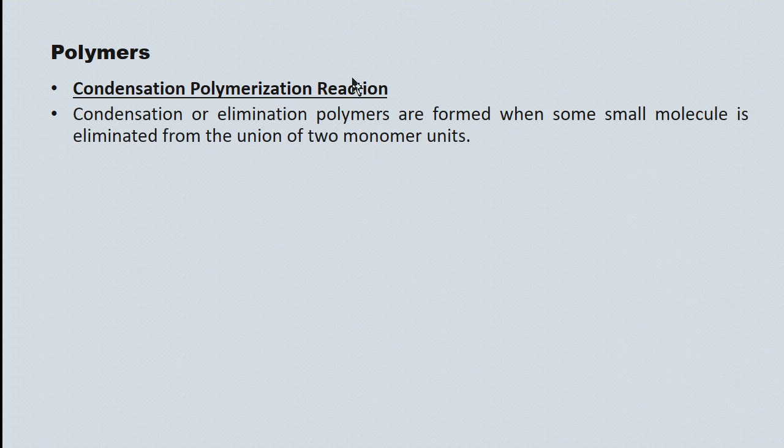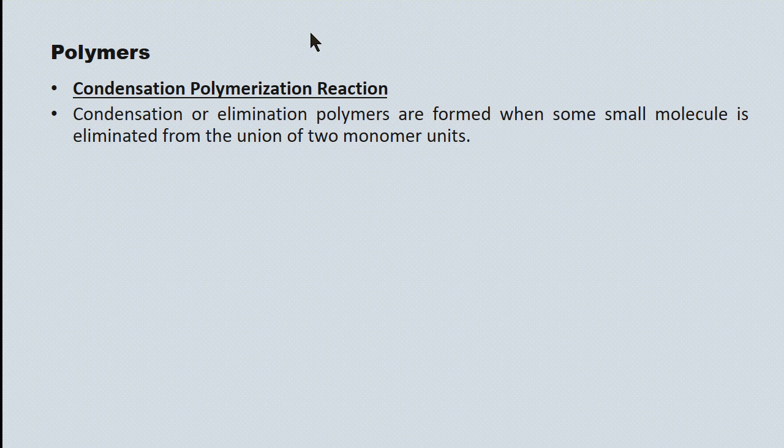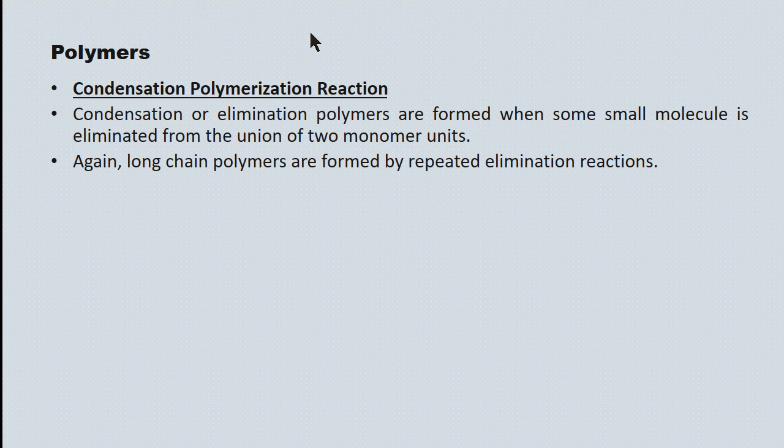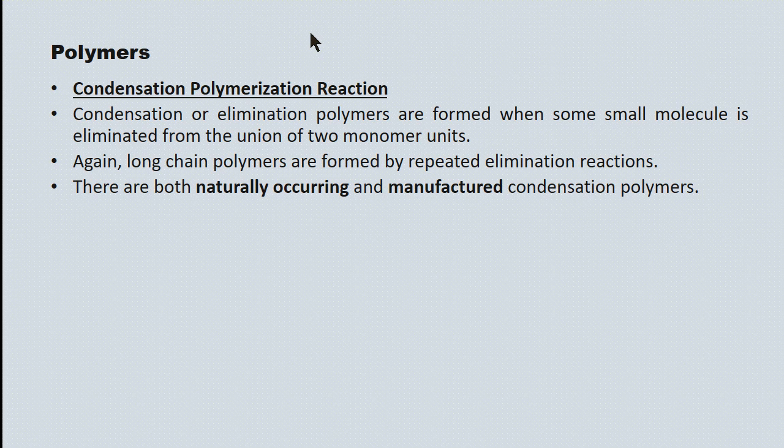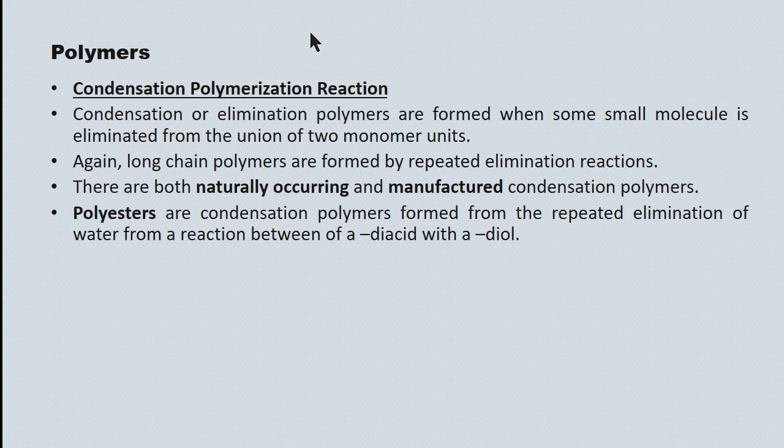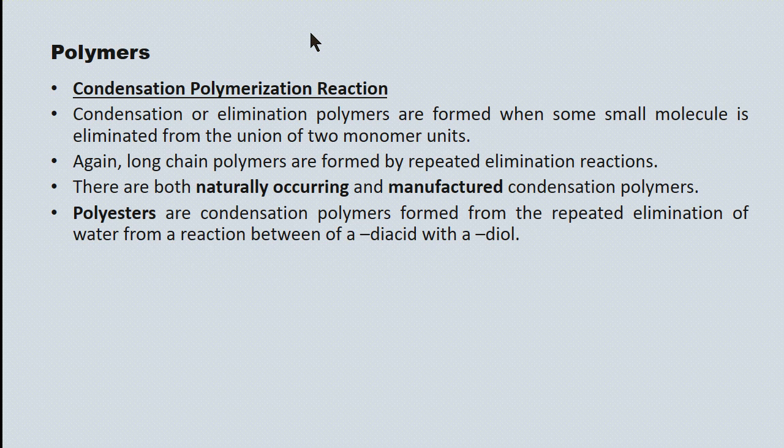Condensation polymerization reactions. We've seen condensation reactions before. Typically, there's a secondary end product. Something like water or perhaps a hydrogen halide is eliminated when two monomer units polymerize. Again, very long chain polymers can be formed through the repeated elimination of this small secondary molecule. Condensation polymers are both naturally occurring and produced through a manufactured process. There's a tremendous variety of them. Polyesters are condensation polymers. And we talked about esters previously. An ester is formed when water is eliminated from a reaction between an acid and an alcohol.